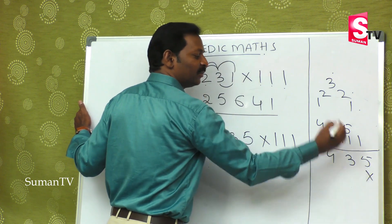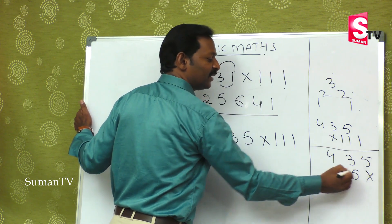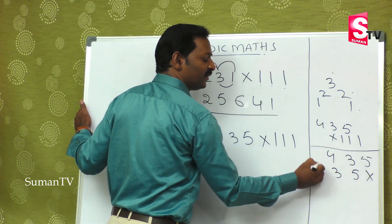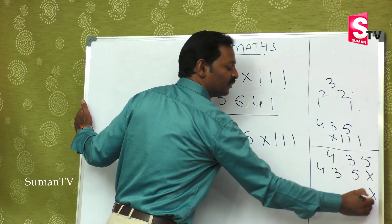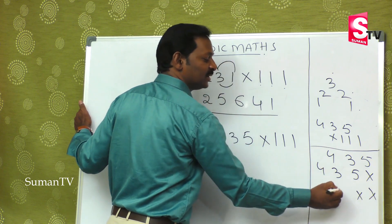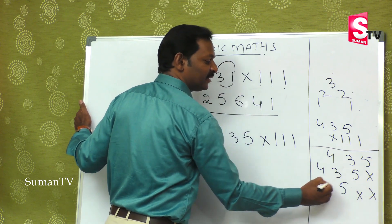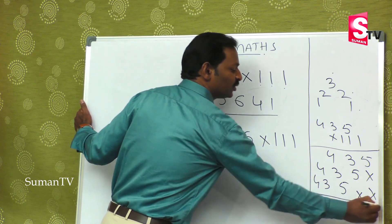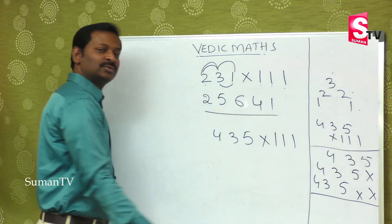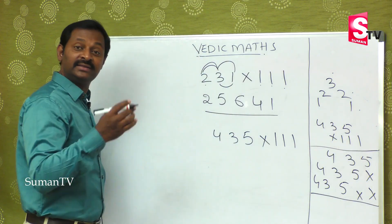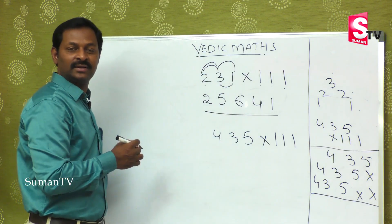Leave 1 place and repeat: 1 times 5 is 5 (shifted), 1 times 3 is 3, 1 times 4 is 4. Then leave 2 places and repeat again: 1 times 5, 1 times 3, 1 times 4. So this is the lengthiest process.